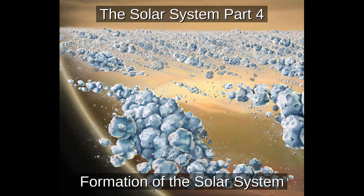Hello and welcome to Astronomy with Mr Gerin. This is the last part of my series on the solar system. In parts 1 to 3 we've learned about the various objects in the solar system, how they orbit and how we've explored our solar system. Today we'll look at how the solar system formed and the effects of gravity on planets and other objects.